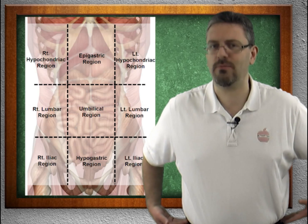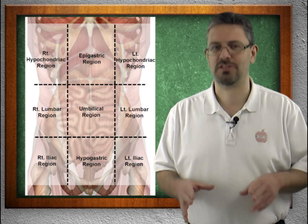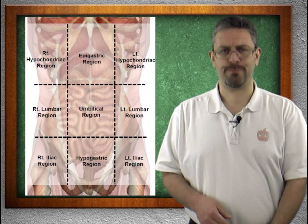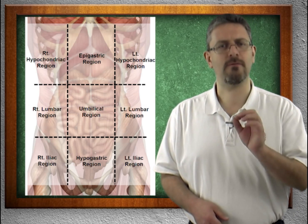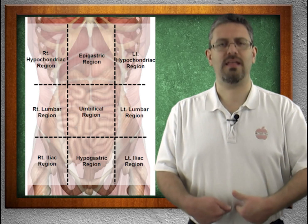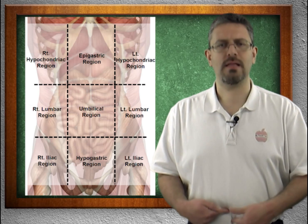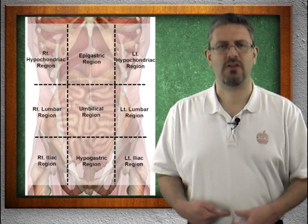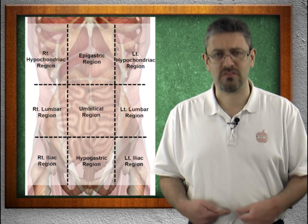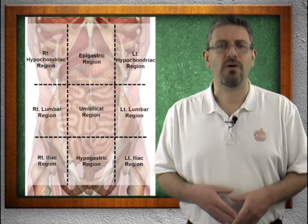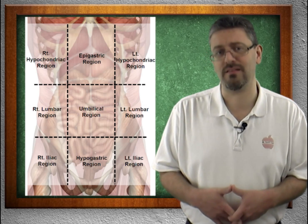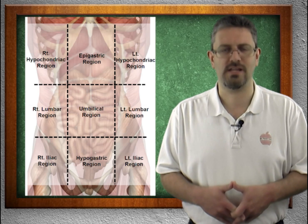We have a left and we have a right — life just got a lot easier. Now moving down the middle, which is also very easy. Let's begin with the belly button, otherwise known as the umbilicus — the umbilical cord. That area is called the umbilical region, right where the belly button sits.